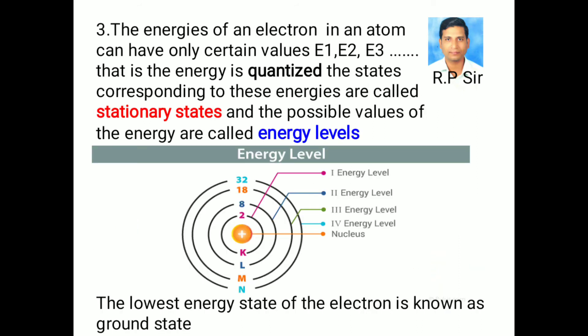The energies of an electron in an atom can have only certain values: E1, E2, E3, and so on. That is, the energy is quantized. The states corresponding to these energies are called stationary states, and the possible values of the energy are called energy levels.